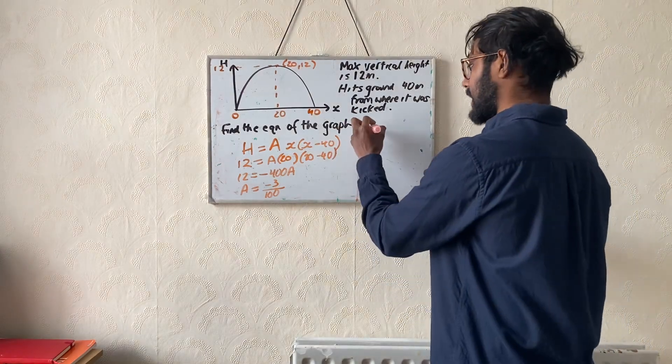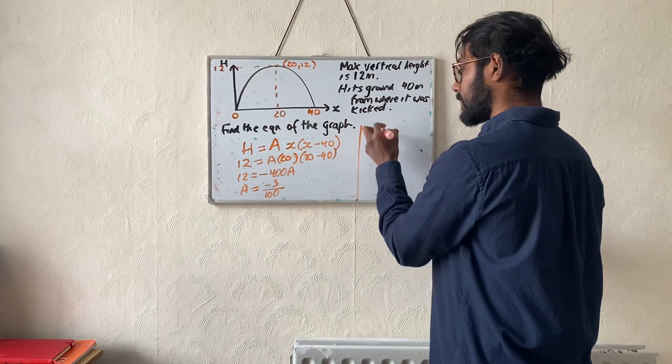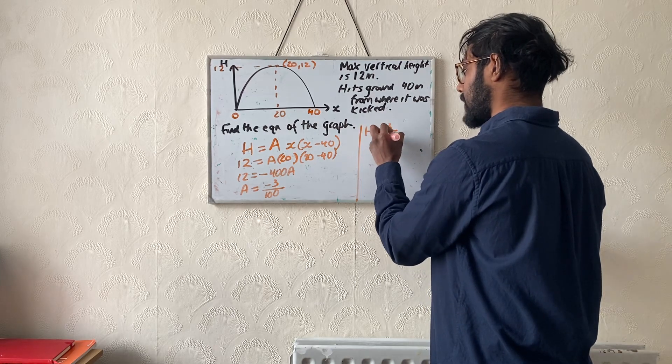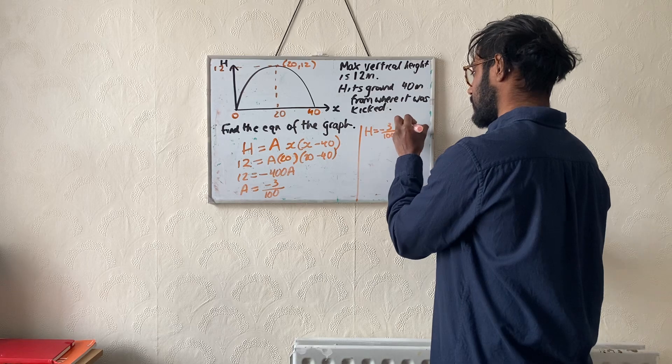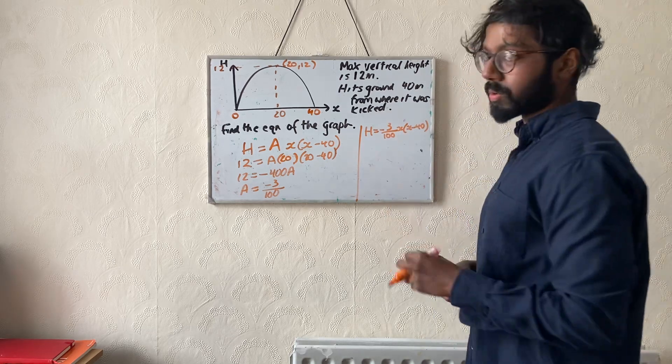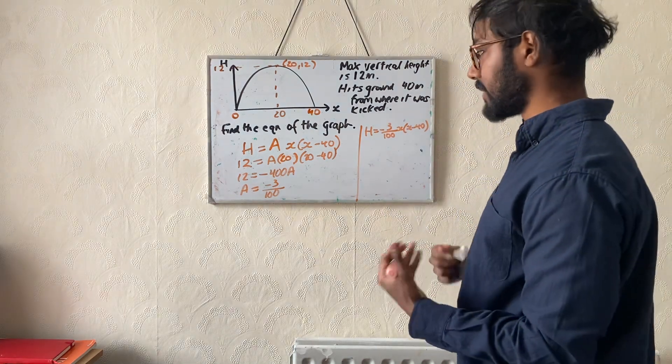I'm just going to write over here that gives me the quadratic model is h equals minus 3 over 100 x brackets x minus 40. Now I don't need to expand because the question didn't specify that I had to give it in a particular form.